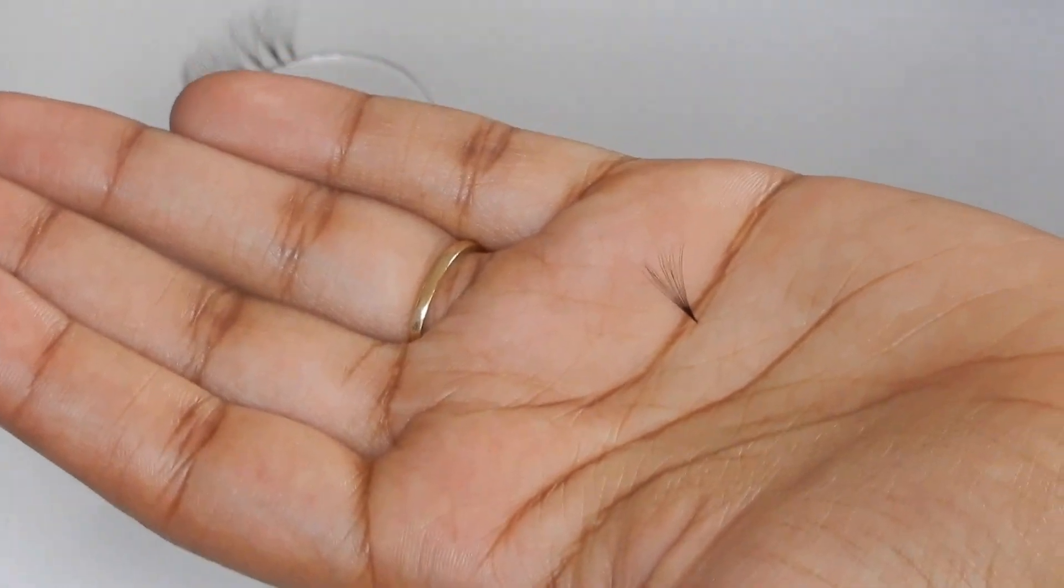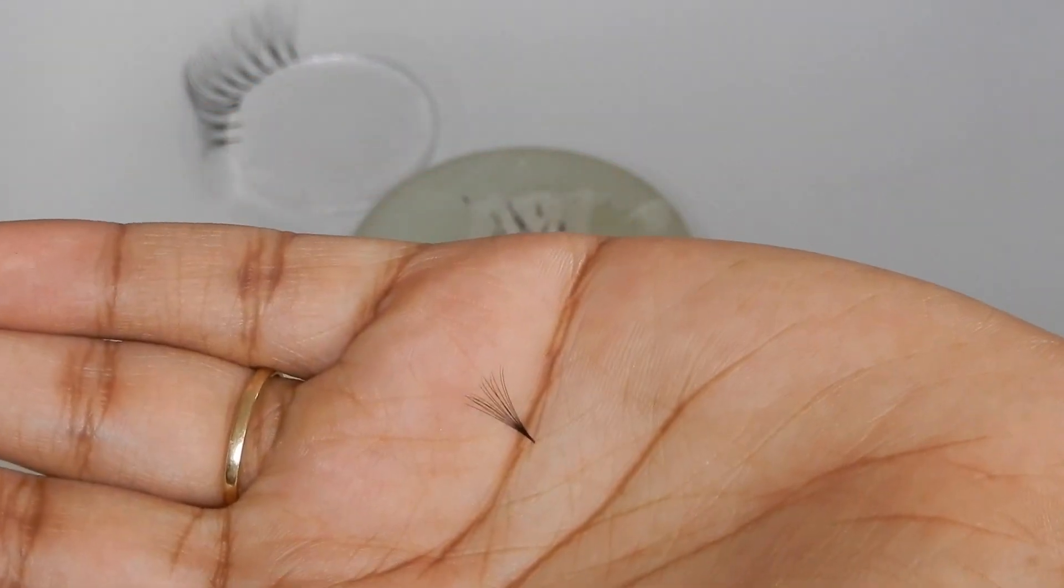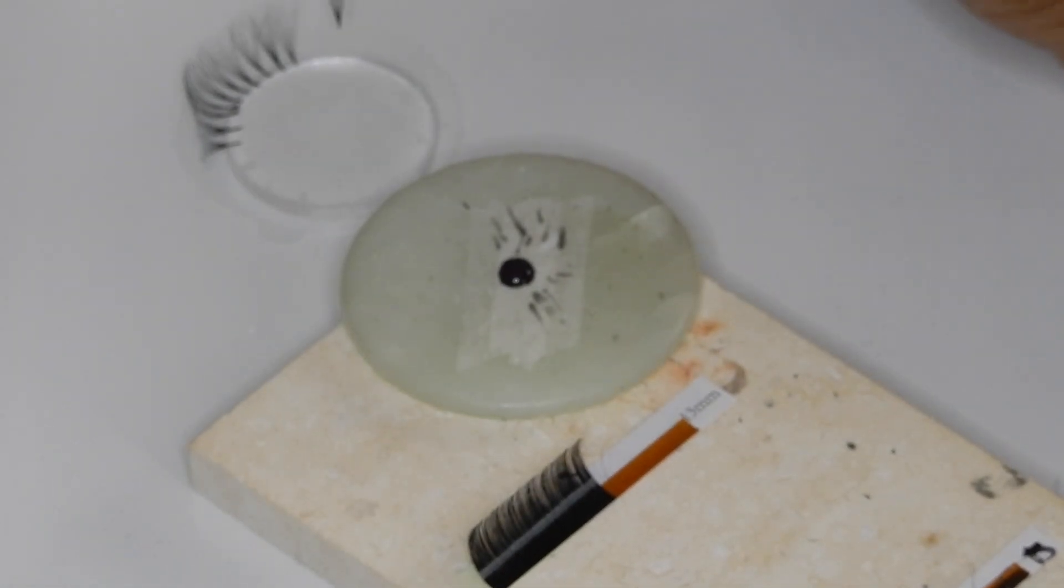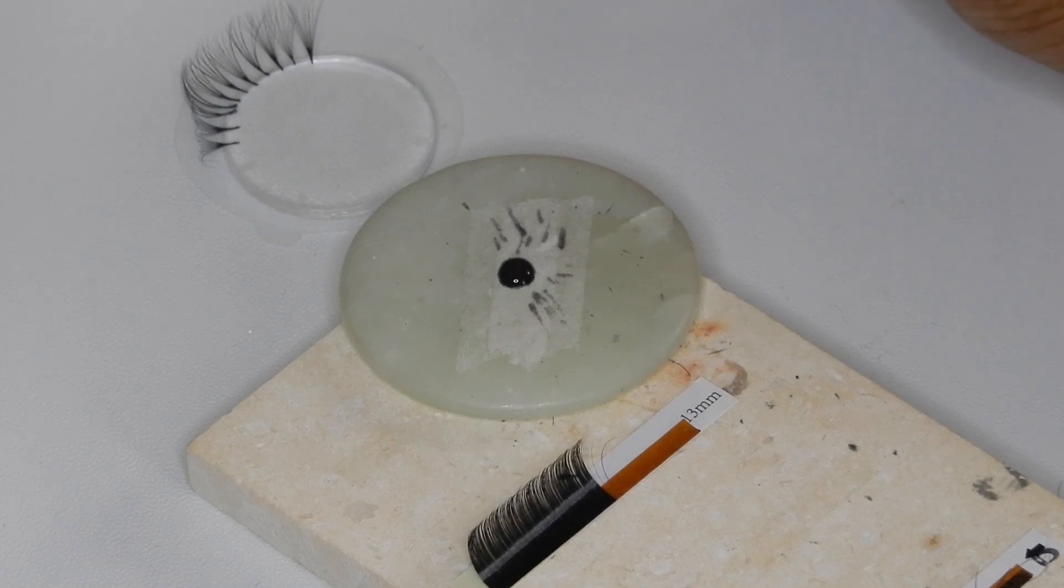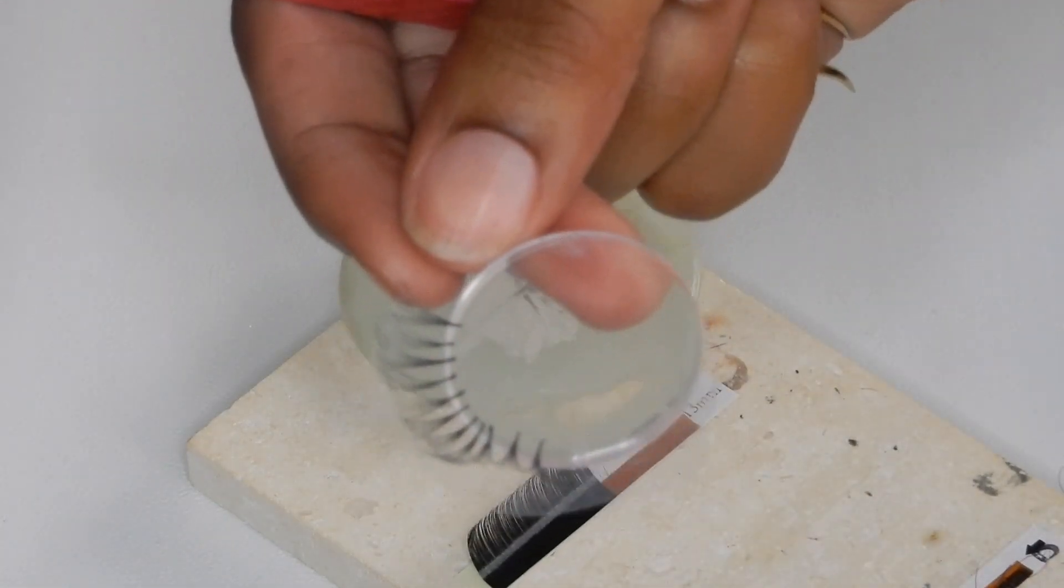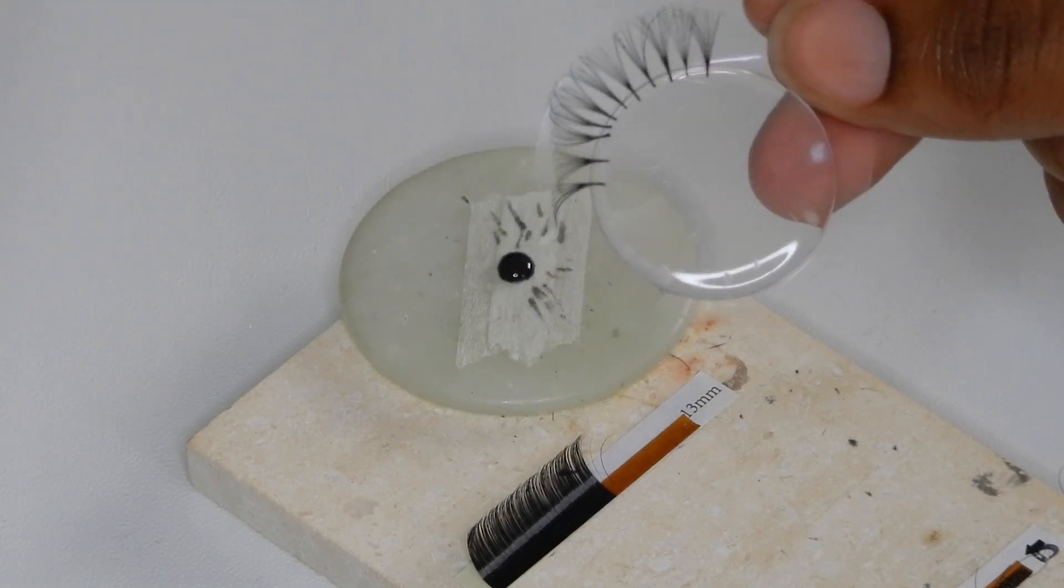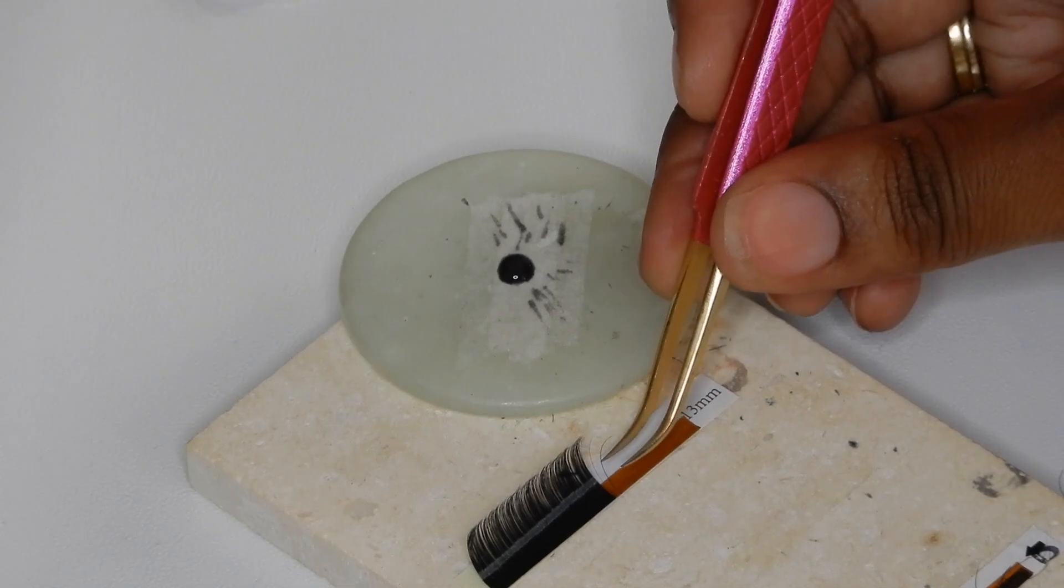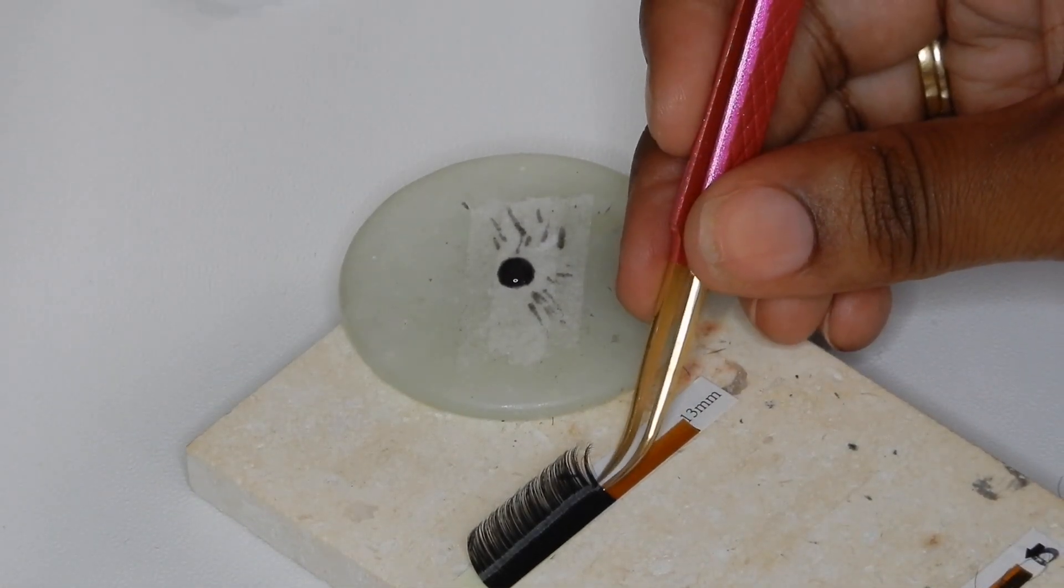And then just take it and add it to your lash tray. So these are how much I made so far. Obviously I did some off camera, but this is how it looks. You guys want to try to make all your fans similar so you get a very similar look all around.